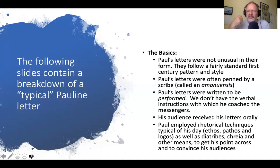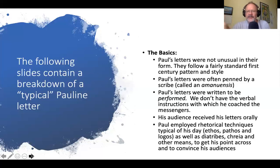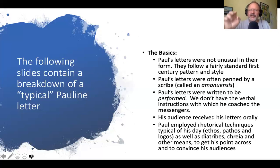Pathos is an appeal to emotion: 'If you don't do what I'm asking, I'm going to be really sad.' Logos is an appeal to rationality or logic: 'If you pay attention to this video and learn it well, you will do well on your exam. If A equals B and B equals C, then A equals C.' Paul used all of those, in addition to diatribes — which are essentially rants — and chreia, which are like sayings such as 'the early bird gets the worm,' and other means to get his point across and convince his audiences.